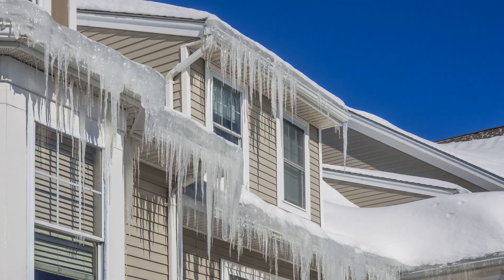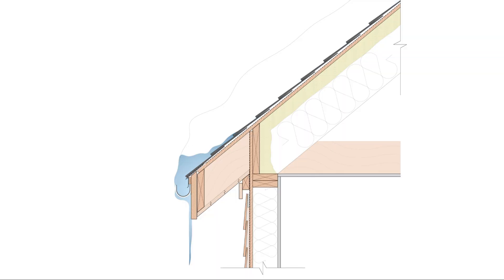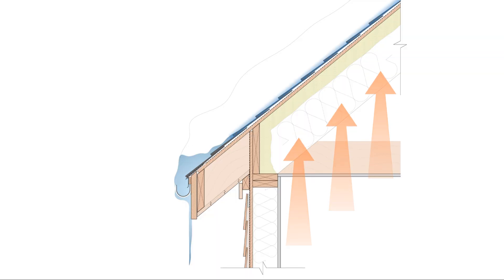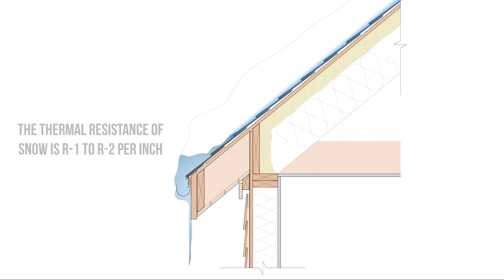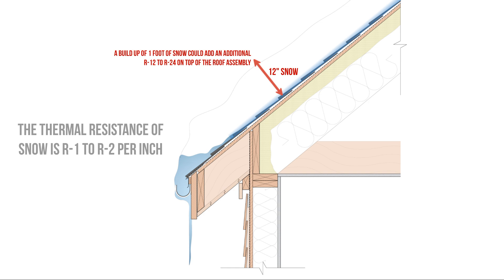How these ice dams form is that we have snow melt on the surface of the roof due to the heat loss from the interior, coupled with the thermal resistance of the snow that's built up on the roof. Snow is actually a decent insulator at between R1 and R2 per inch, which means that if you have a foot of snow built up on your roof, you could be adding an additional thermal resistance of R12 to R24 on top of the roof assembly, and that's more than enough to warm the surface of the shingles to cause the bottom layer of snow to melt.